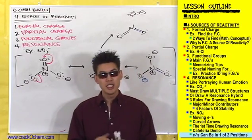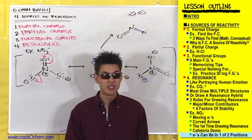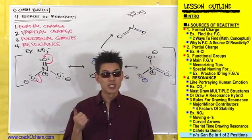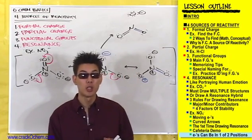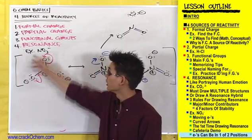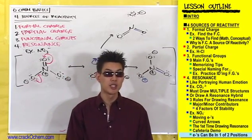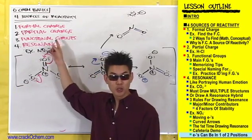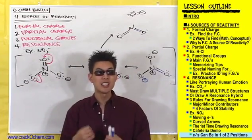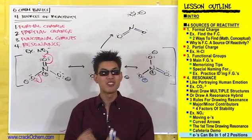So these were the four sources of reactivity. We had formal charge telling us full charges are sources of reactivity because all atoms want to be neutral. We then had polarity telling us partial charges are sources of reactivity for the same reason. We then named nine functional groups because they each react in characteristic ways according to each functional group.